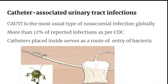Catheter-associated urinary tract infection (CAUTI) is the most common type of nosocomial infection globally. Patients kept on urinary catheters have a chance of getting nosocomial infections. More than 12% of reported infections are CAUTI according to the CDC. The catheter placed inside serves as a route of entry for bacteria. Not following proper protocol, unnecessary catheter insertion, or improper handling or hand hygiene leads to CAUTI.